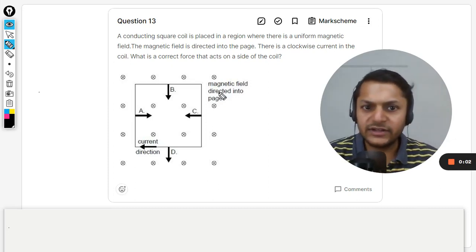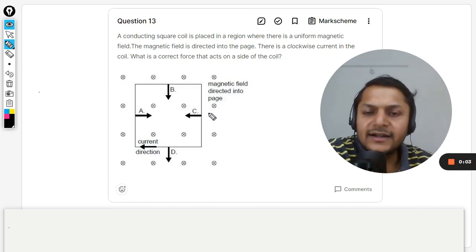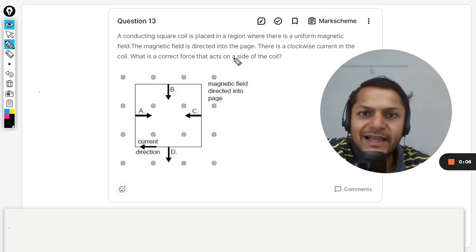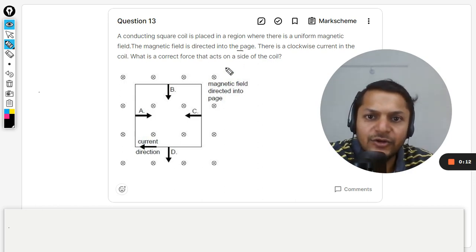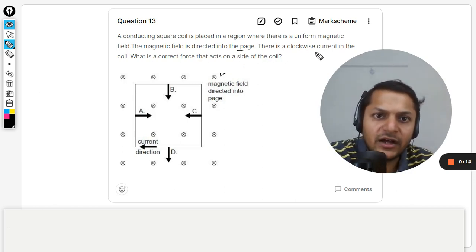Okay dear students, let us see what is there in this question. A conducting square coil is placed in a region where there is a uniform magnetic field. The magnetic field is directed into the page. There is a clockwise current in the coil.